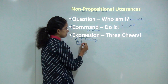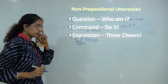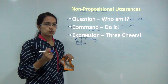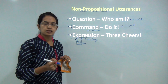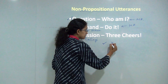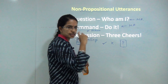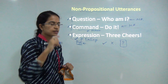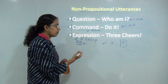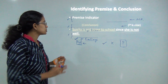So these are the basic three elements we talk about in non-propositional utterance. Now we are very clear whether a statement is propositional — whether I can say this statement is correct or incorrect — or I do not have information that can lead me to whether the statement would be correct or incorrect. Now if I move on to understanding premise and conclusion, it becomes very interesting.